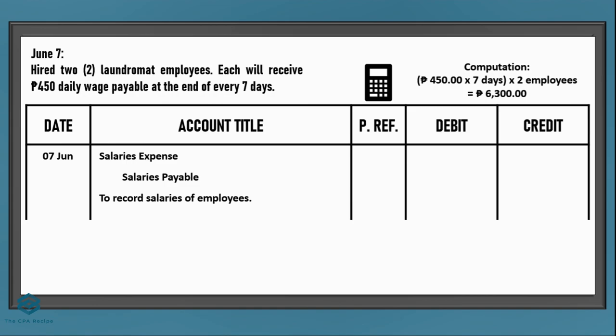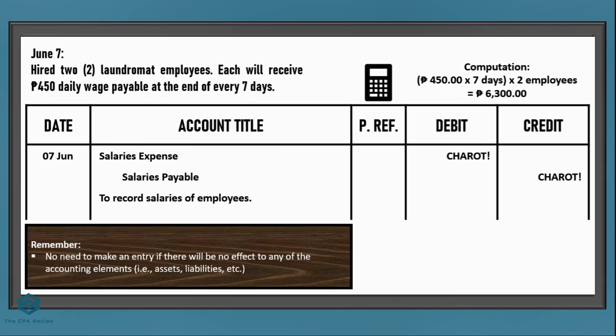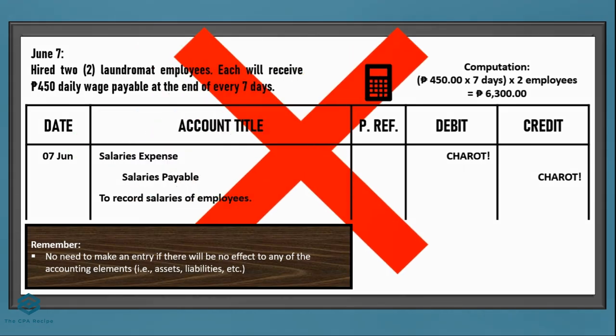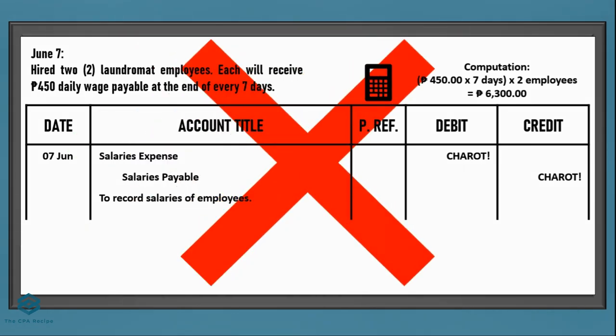Wait — there's actually no entry here! Why? Because we only hired the employees; there is no effect on assets, liabilities, or equity yet. We don't have an expense yet because they haven't started working. So if you made an entry, put a big red X on your paper.